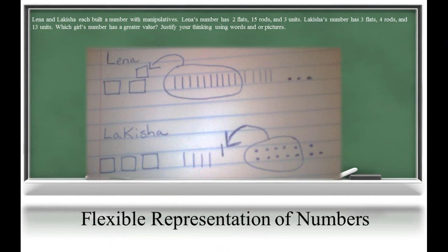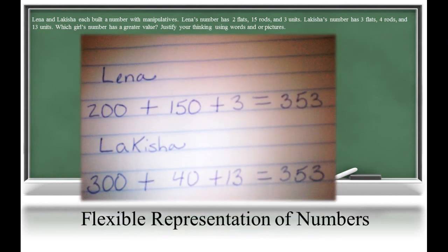Notice how the learner circled groups of ten in the picture and used arrows to model regrouping. Remember, when solving problems, there are multiple correct solution paths. Students who have a strong conceptual understanding of place value may solve this task by creating a number sentence to combine the values given, as shown here. It is important not to jump to the most efficient strategy prior to giving your child time to delve into the concepts at the concrete and pictorial level.